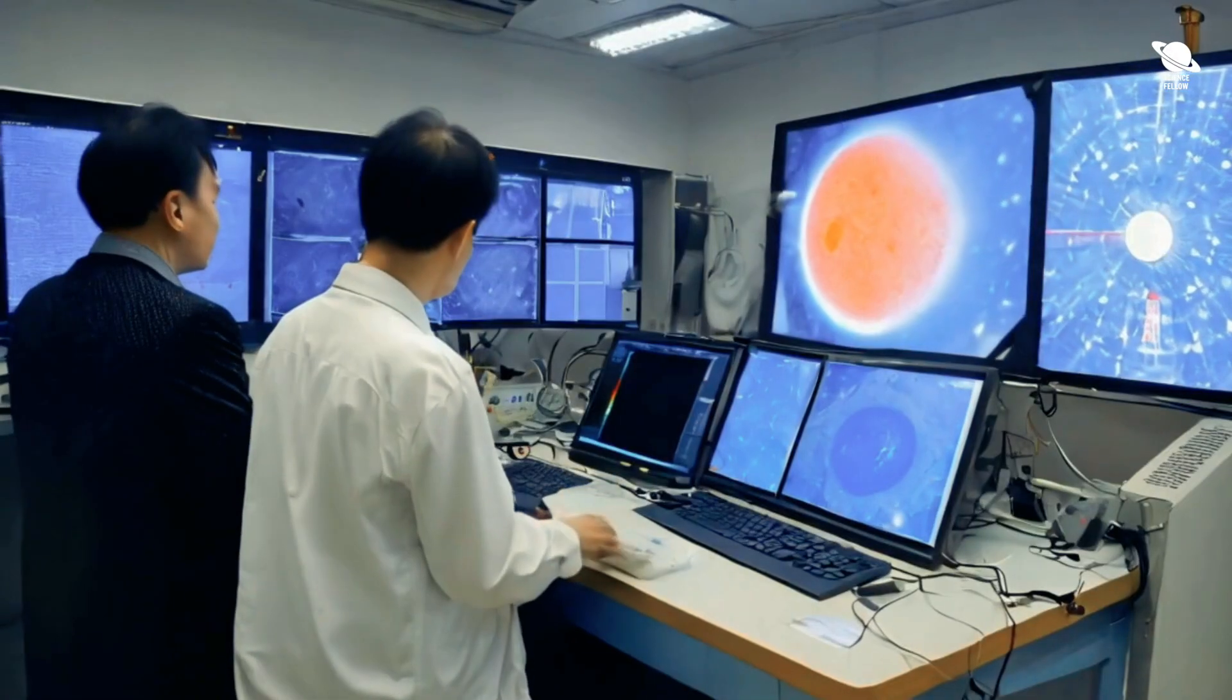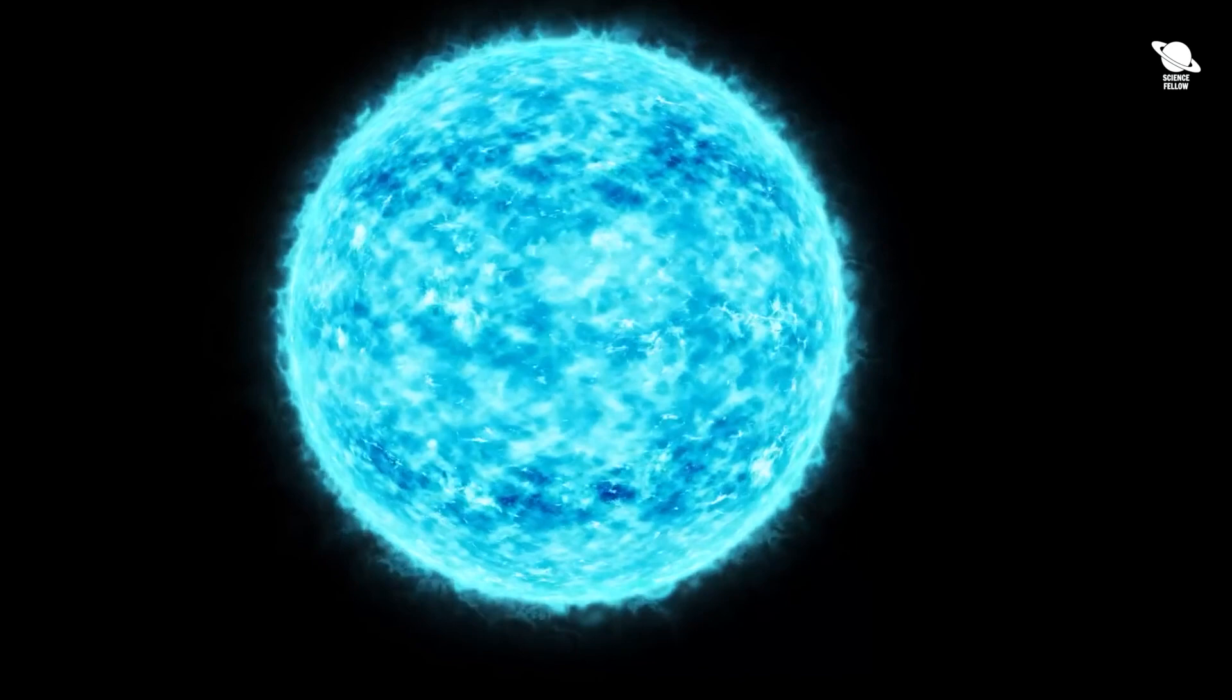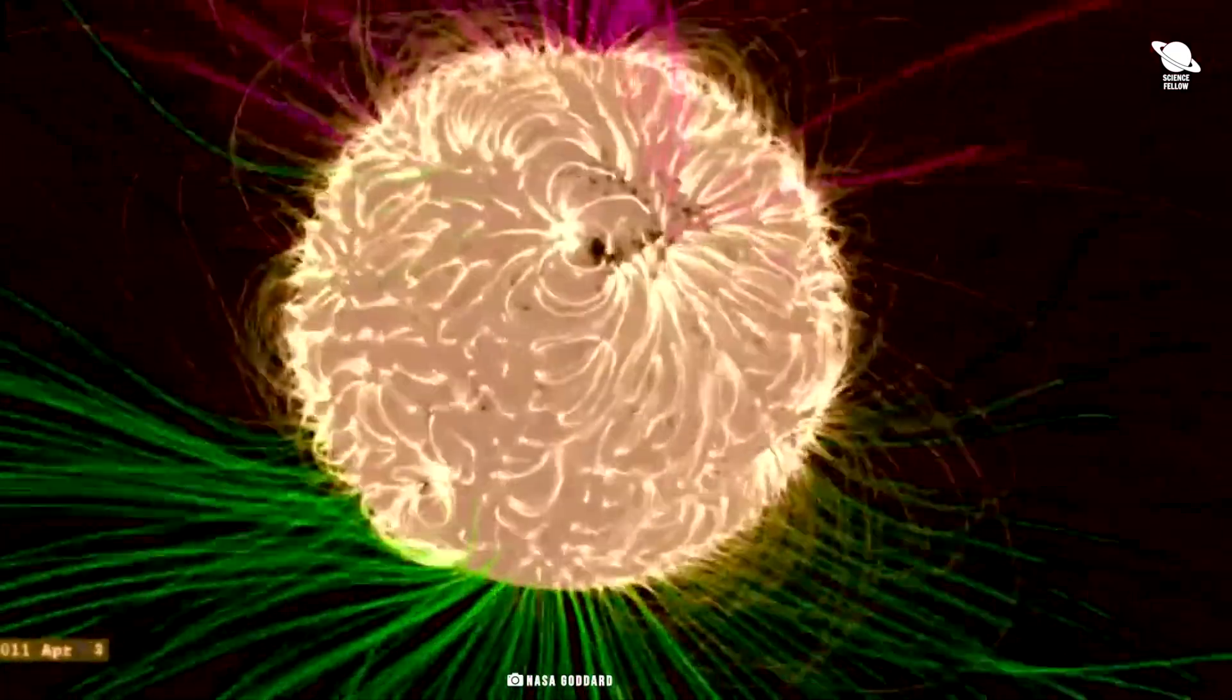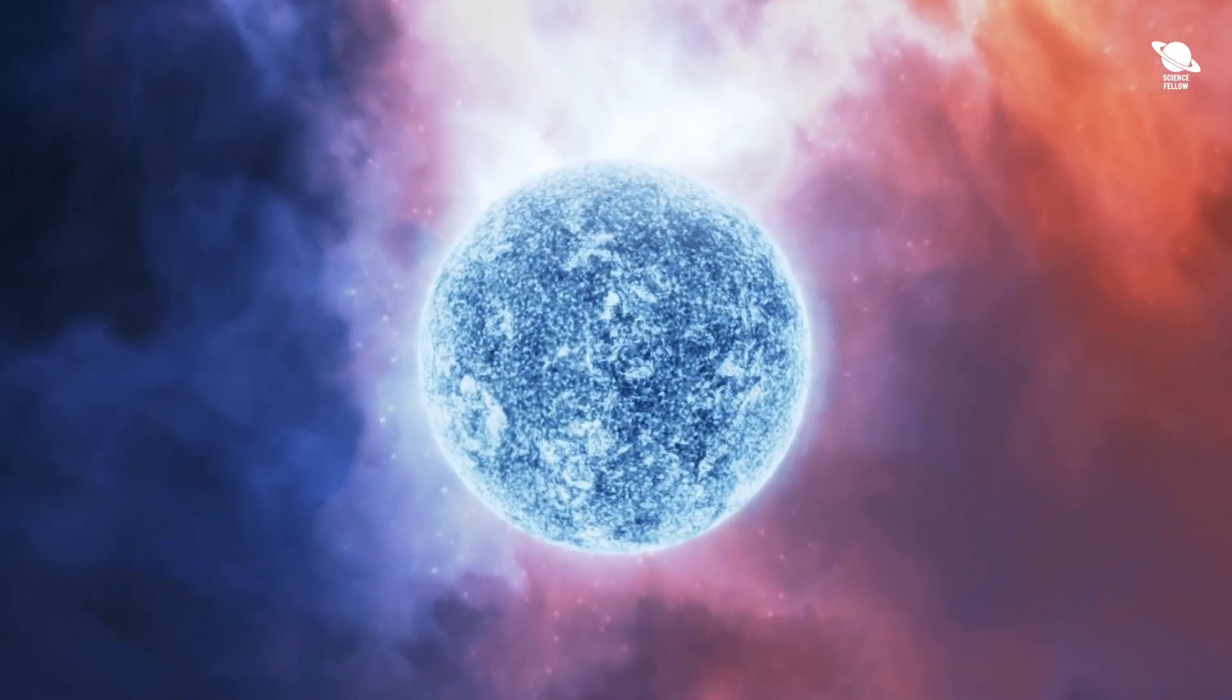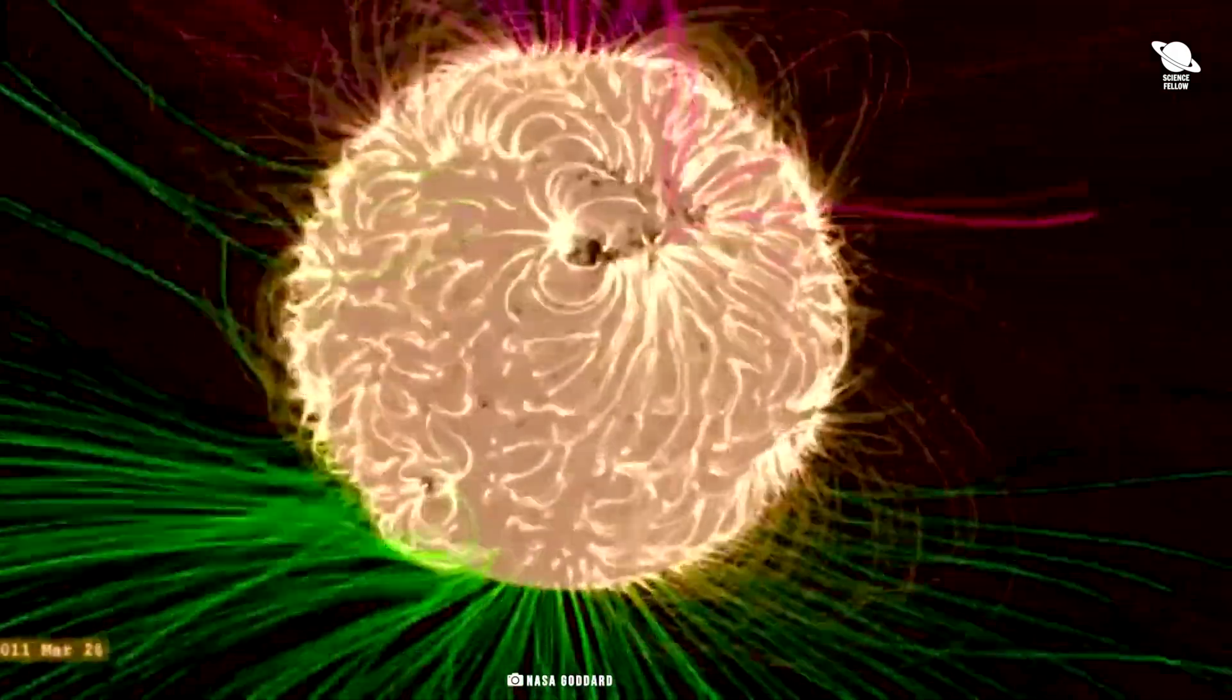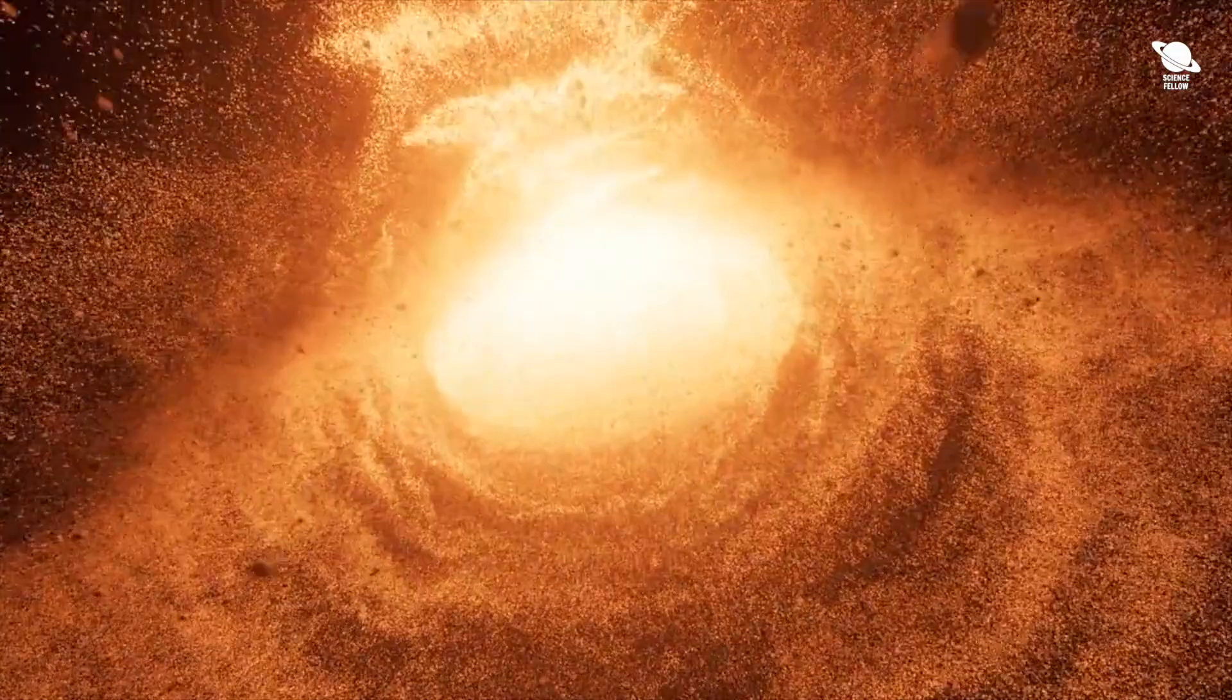Furthermore, researchers from the Chinese Academy of Science looked into Betelgeuse's temperature changes during this fading period. They found evidence of failed star spots, somewhat similar to sunspots on our own sun, as the likely cause. These disruptions in Betelgeuse's magnetic field temporarily blocked radiation, leading to the observed temperature drop.